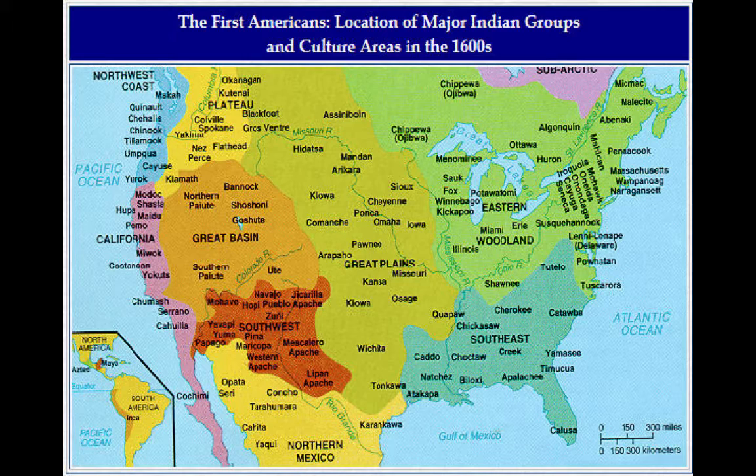In the Southwest you have the Pueblo, the Navajo, and the Apache. Then the Northwest Coast — you can mention the Nez Perce, the Plateau, and the Cayuse. It's a good map to reference; have your students know the regions. That's all you really need, and it'll help them out.